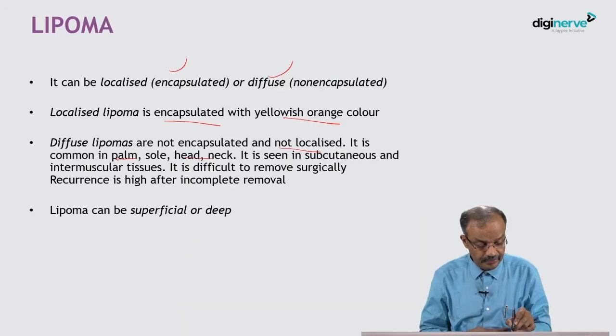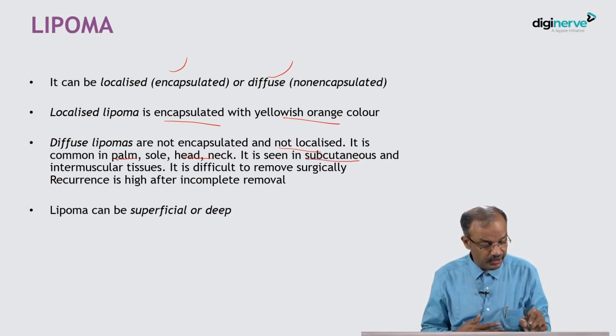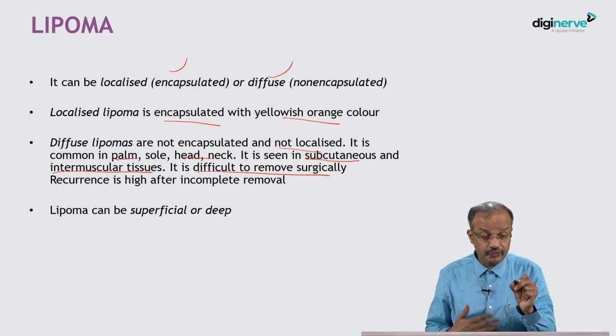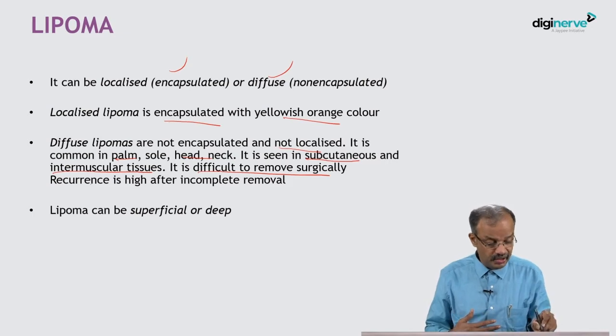Diffuse lipomas are seen in the subcutaneous plane and intermuscular tissues. Lipoma can occur anywhere in the body except the brain. It is difficult to remove surgically, and recurrence is high after incomplete removal because there is no capsule, unlike the usual traditional lipoma which has a capsule.